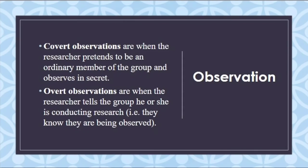Observation methods: Covert observation is when the researcher pretends to be an ordinary member of a group and observes in secret — the observer does not show their identity. Overt observation is when the researcher tells the group that he or she is conducting research, so participants know they are being observed.